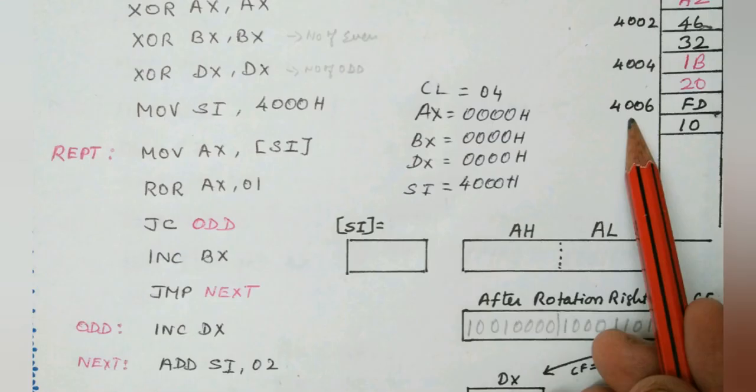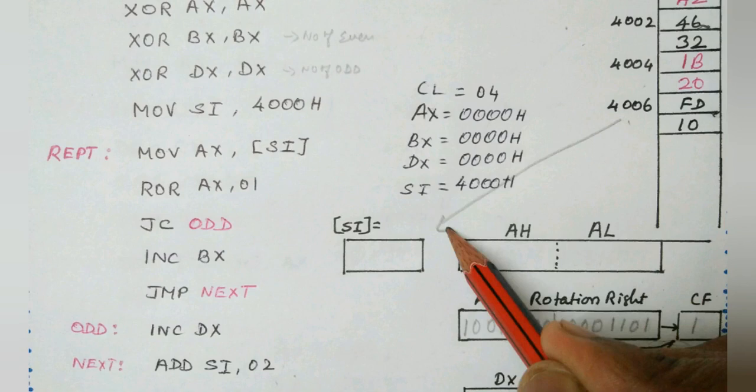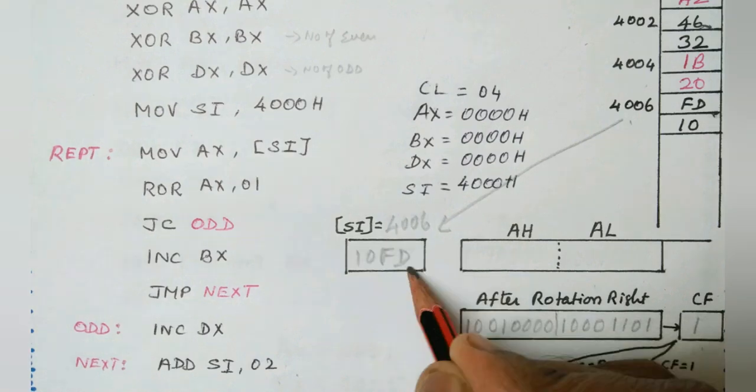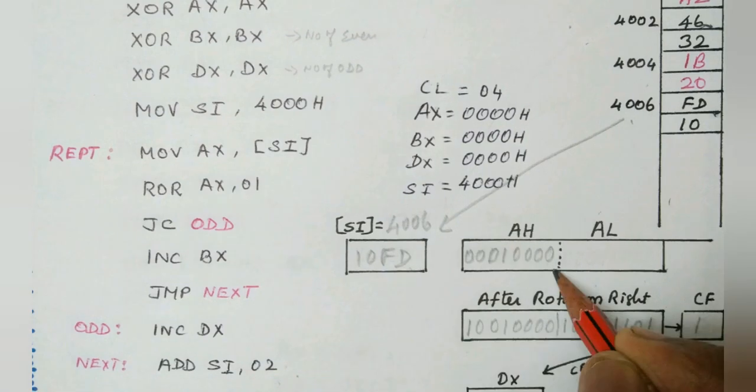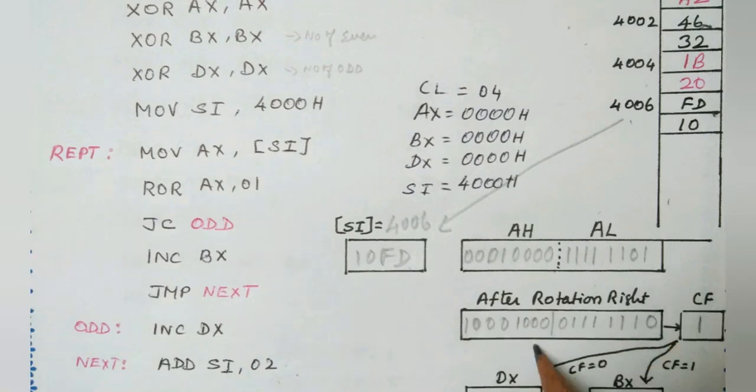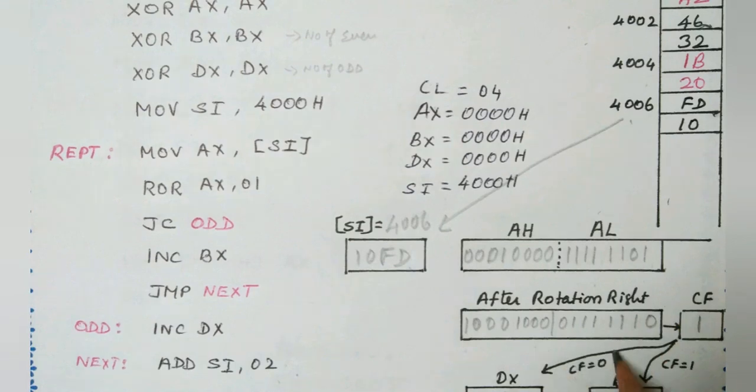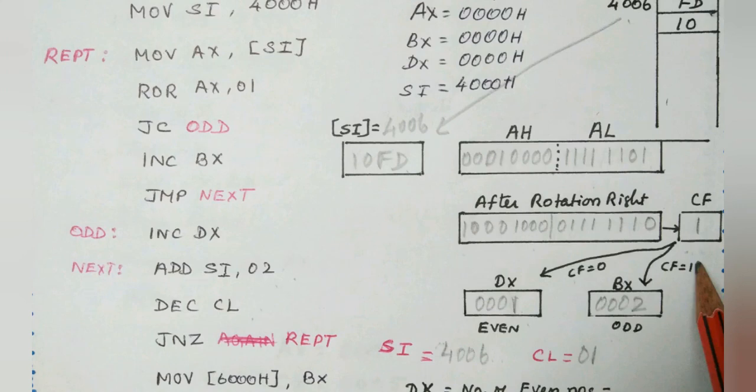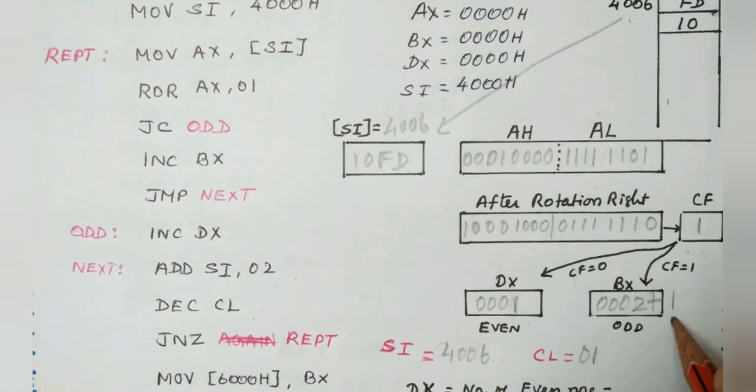Now the SI register points to the location 4006. The value loaded from the location is 10FD. The 10FD is now moved to the AX register. So if you see the last bit, LSB is 1. Again I am having a 1 in the LSB. Now it is moved to the carry flag. Now the carry flag becomes 1. Again CF is 1. Hence BX will be incremented by 1. Now BX becomes 3.